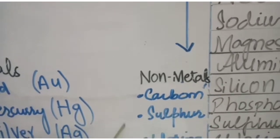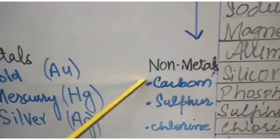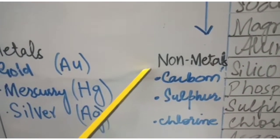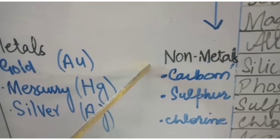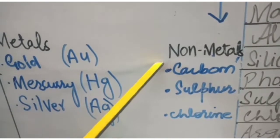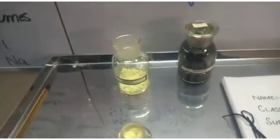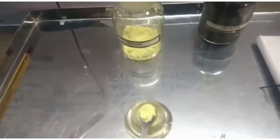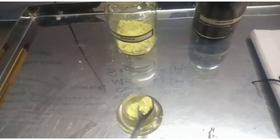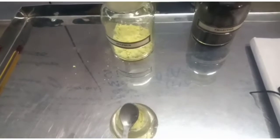Now non-metals. We have examples here: carbon, sulfur, and chlorine. Non-metals can exist in all three states — solid, liquid, and gas — but generally they are gases, and some are liquids, but some are also solids. Look at sulfur: it's not shiny. Non-metals are bad conductors of heat and electricity.